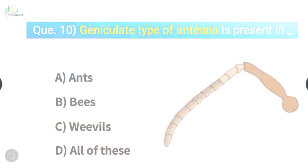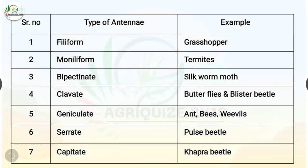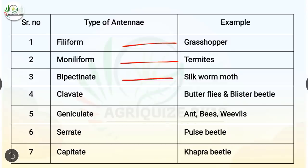Let's know more about antenna types. Filiform type: example is grasshopper. Moniliform type: example is termites. Bipectinate type: example is silk moth. Clavate type: examples are butterflies and blister beetle. Geniculate type: examples are ant, bees, and weevils. Serrate type: example is pulse beetle. Capitate type: example is khapra beetle.